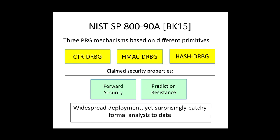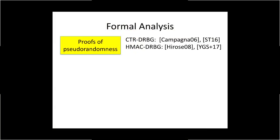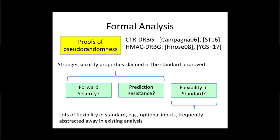Earlier revisions of this standard contain the now infamous dual EC DRBG. And perhaps because of the attention paid to the dual EC, these other algorithms — despite their widespread deployment — have received surprisingly patchy formal analysis to date. While there have been proofs of the pseudo-randomness of the counter-DRBG and the HMAC-DRBG, as far as we are aware, these stronger security properties claimed in the standard are still unproven.